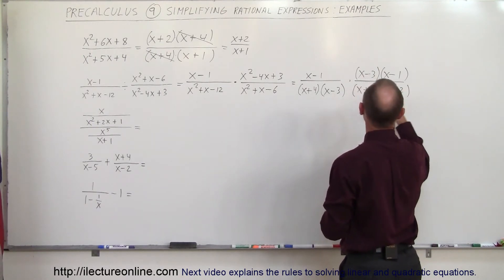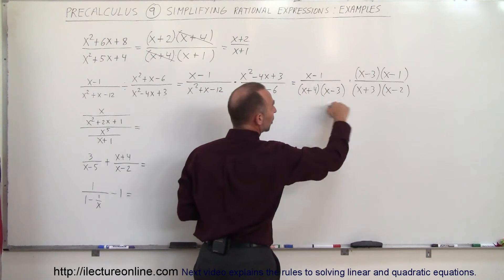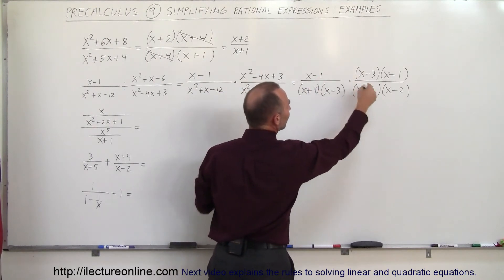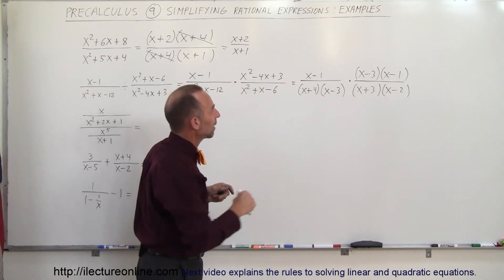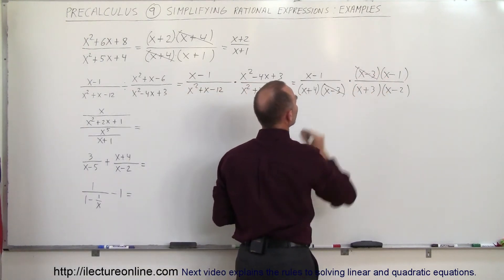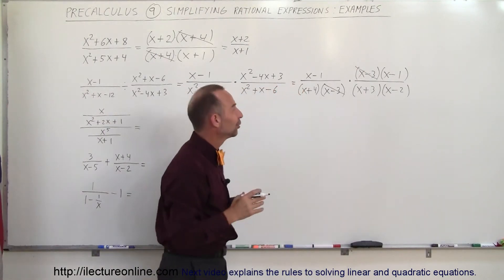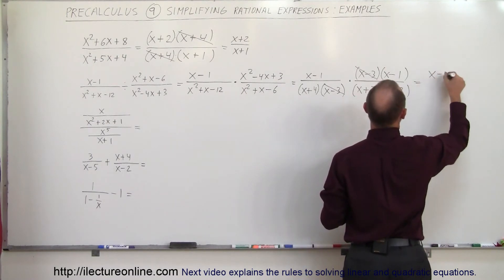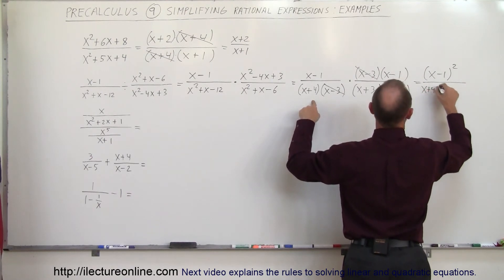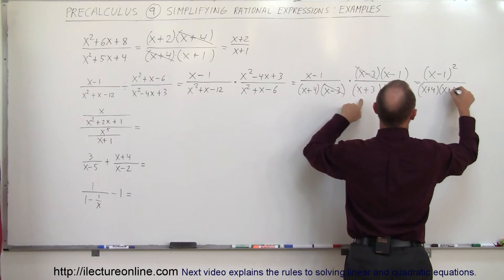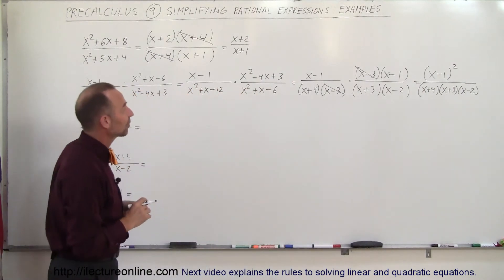Since everything is multiplied, even though I have a multiplication sign and two fractions, I could write that all over a single rational fraction. We have an x minus 3 and an x minus 3, so those cancel out. Those are the only two binomials I can cancel, so what I end up with is an x minus 1 quantity squared, divided by x plus 4 times x plus 3 times x minus 2. That's as far as I can simplify — that would be the end result.